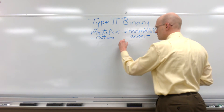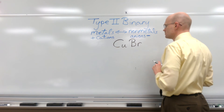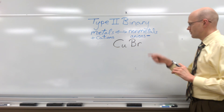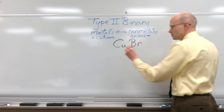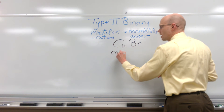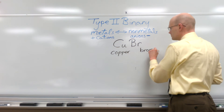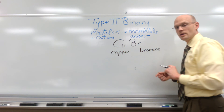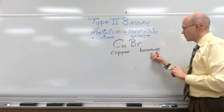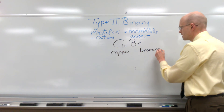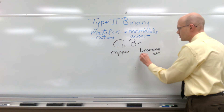Let's try another example with the formula CuBr. We first recognize that copper is a transitional metal. We label the elements involved: copper and bromine. Since this is a binary compound, we change bromine to bromide — the anion ending is changed — so we have bromide.